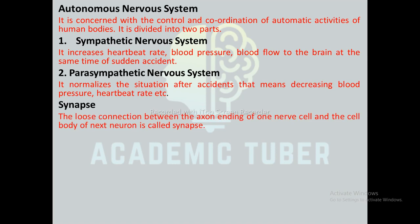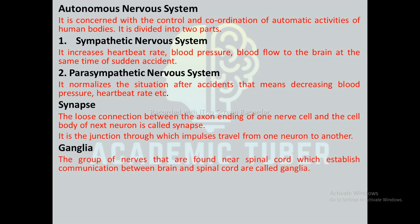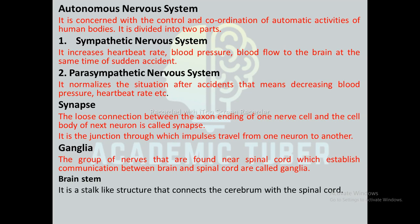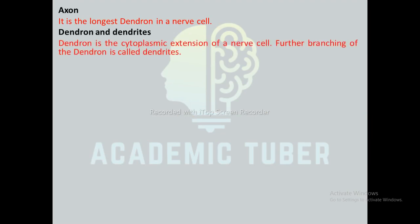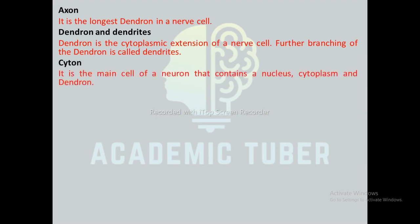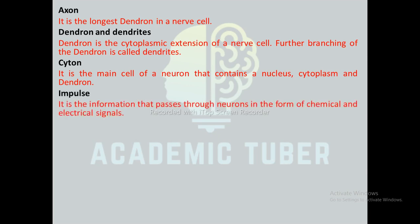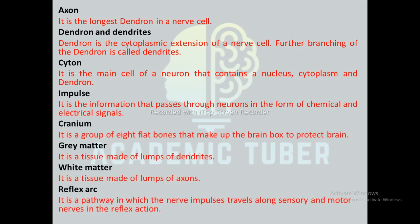Synapse: the loose connection between the axon ending of one nerve cell and the cell body of the next neuron is called a synapse — it is the junction through which impulses travel from one neuron to another. Ganglia: groups of nerve cells found near the spinal cord that establish communication between brain and spinal cord. The brainstem is a stalk-like structure connecting the cerebrum with the spinal cord. An axon is the longest dendron in the nerve cell. Dendron is a cytoplasmic extension of the nerve cell, and its branching is called dendrites. Cytone is the main cell body of the neuron containing the nucleus and cytoplasm. Impulse is the information that passes through neurons in the form of chemical and electrical signals. The cranium is a group of eight flat bones that make up the bony brain box to protect the brain.